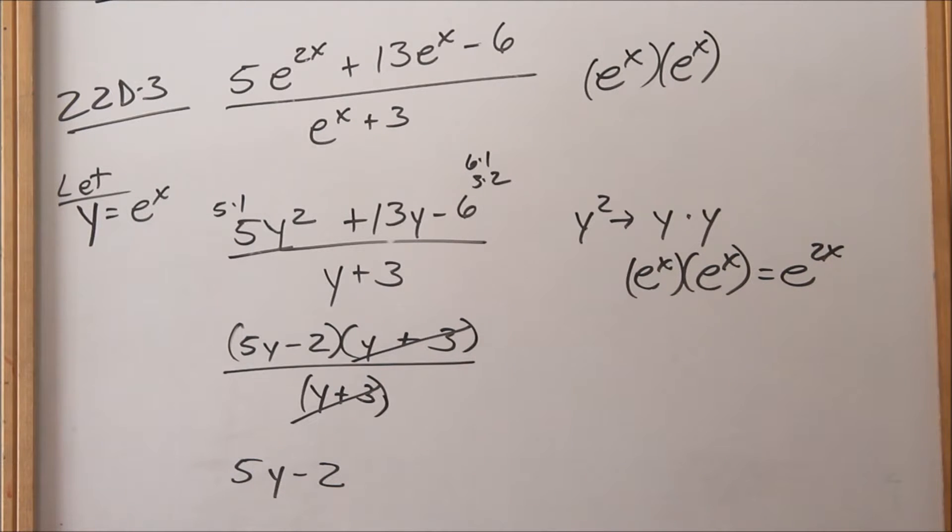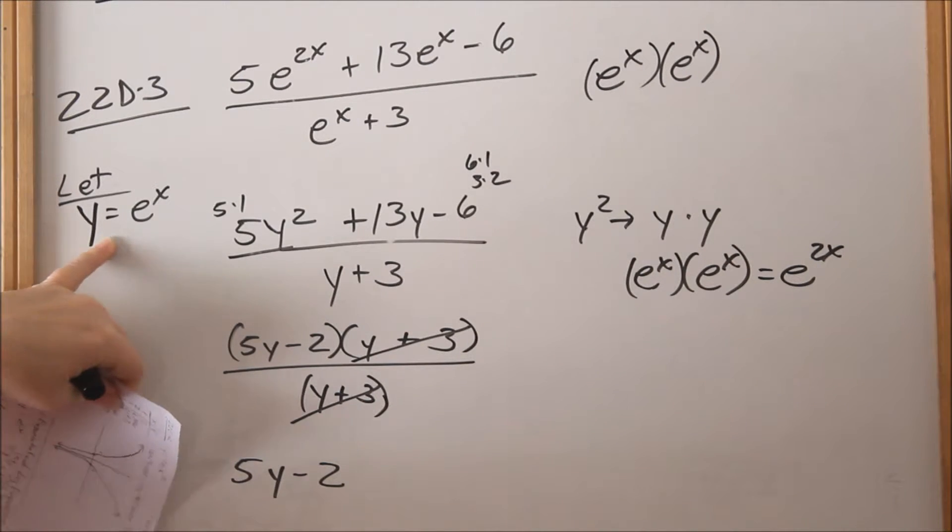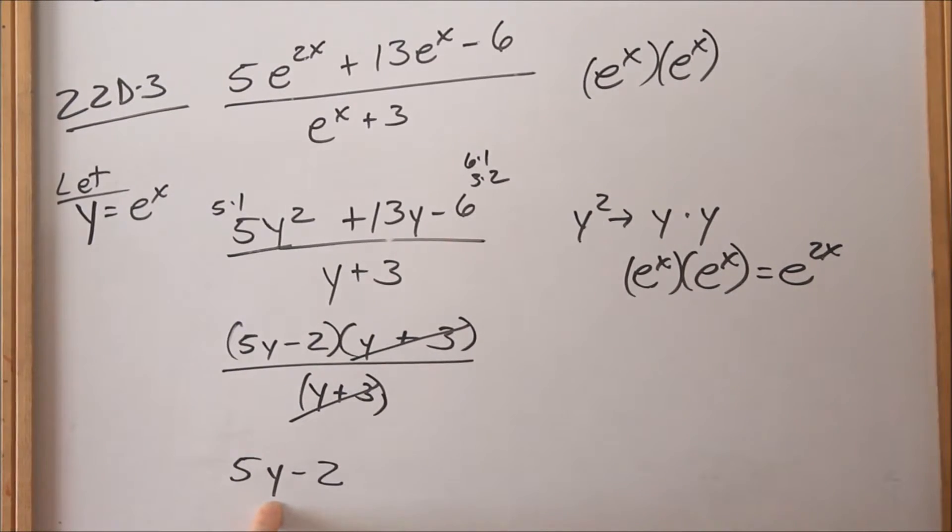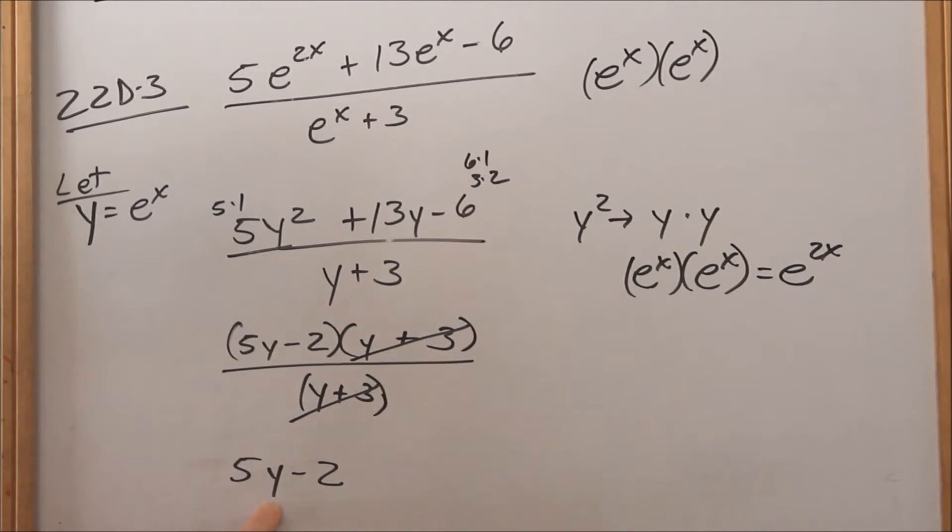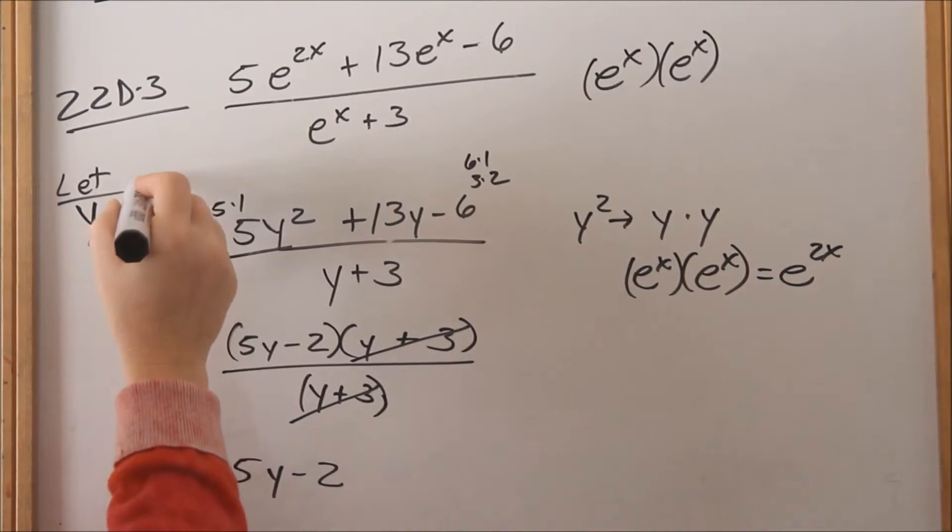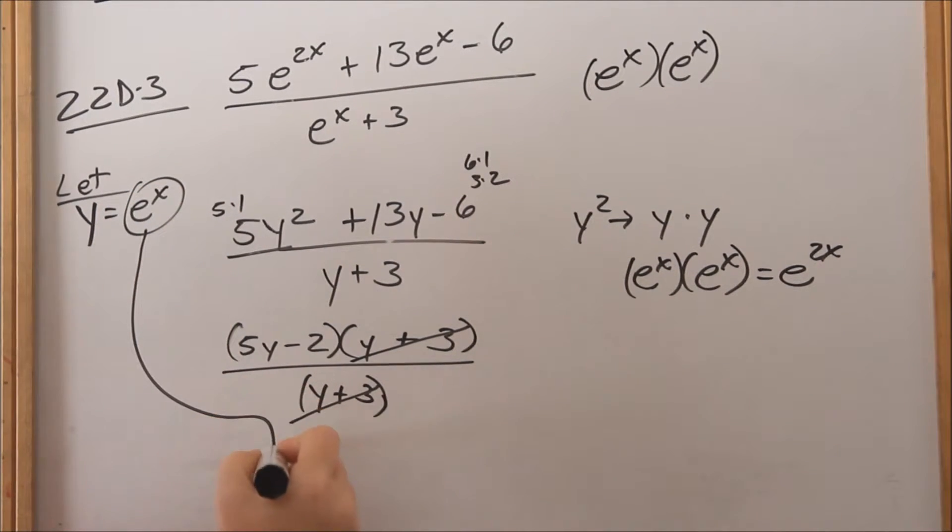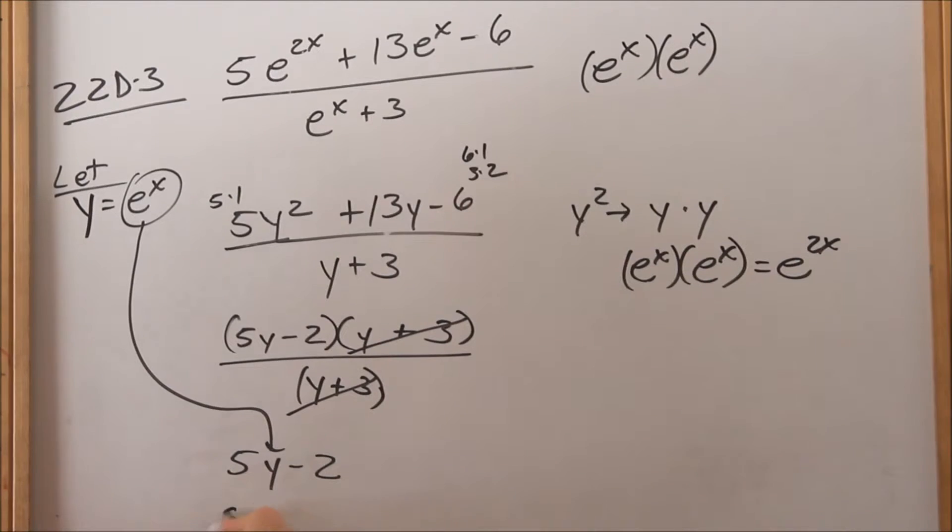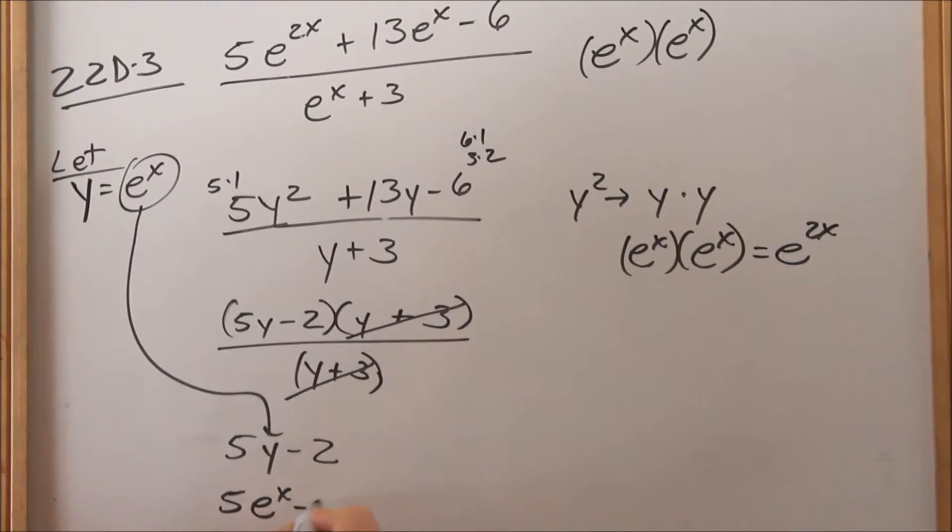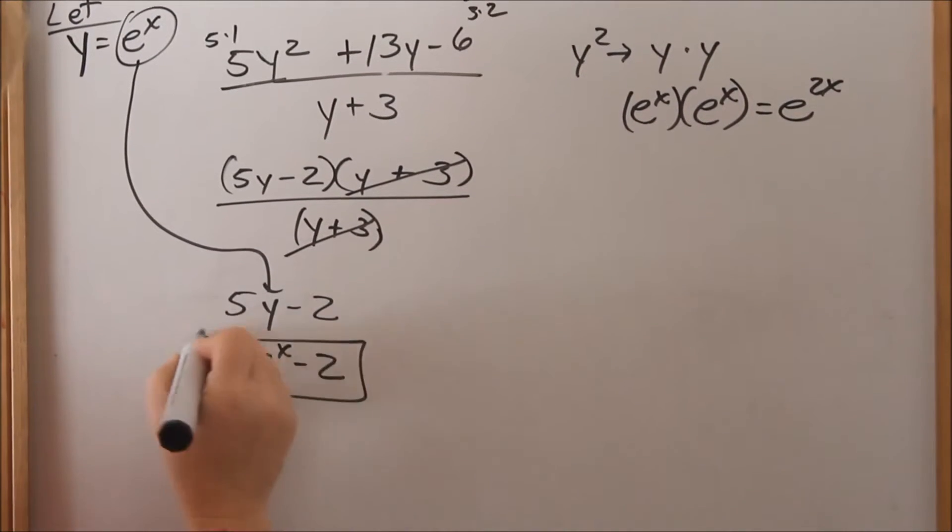I'm not done. That's not my final answer. I need to go back and make the substitution, because I don't want my answer to be in y's—I want it in e^x. So everywhere I see a y, I replace it with e^x. So 5e^x - 2 would be your final answer.